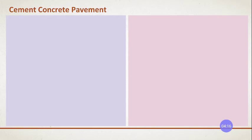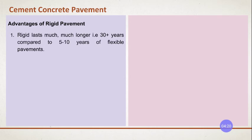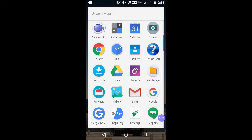Next are the advantages of rigid pavement. It lasts for more than 30 years compared to the lifespan of flexible pavements of up to 10 years. It is durable, so we can go for rigid pavement in the case of high traffic loads.